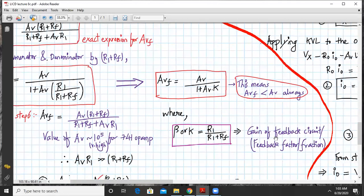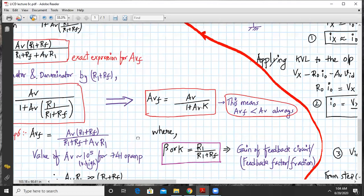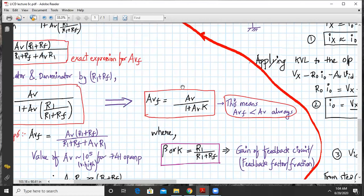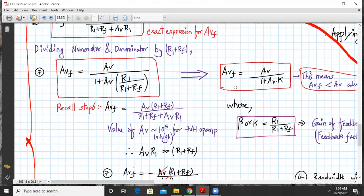where K is basically called as the gain of the feedback network, or it is called as a feedback factor. These are the various definitions for the feedback factor, and it is also termed as beta in many literature. What does this AVF equals AV upon 1 plus AV into K indicate? It indicates that the open loop gain AV is always greater than the closed loop gain. In this case the AVF will always be less than AV.